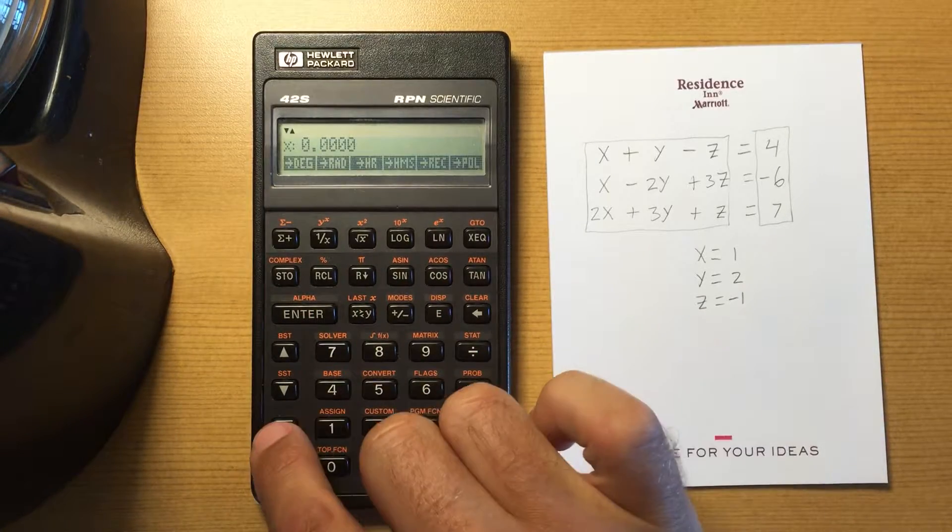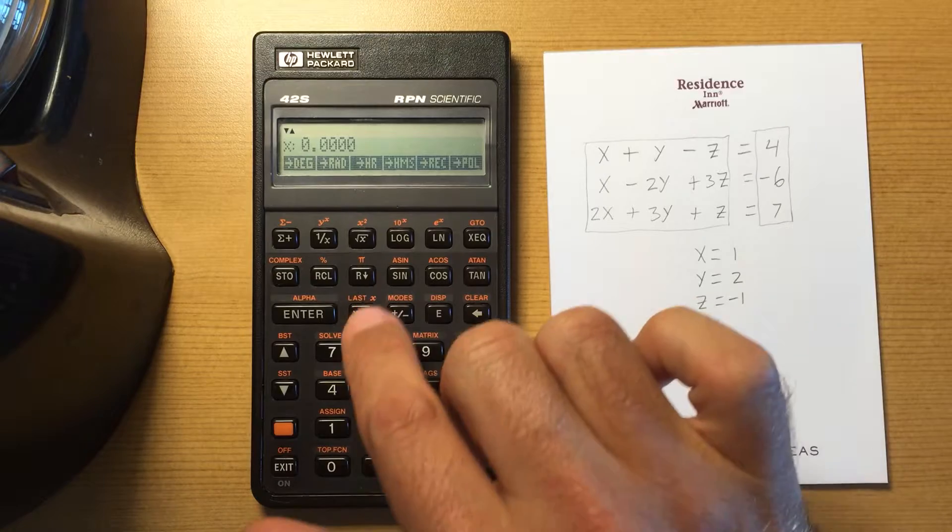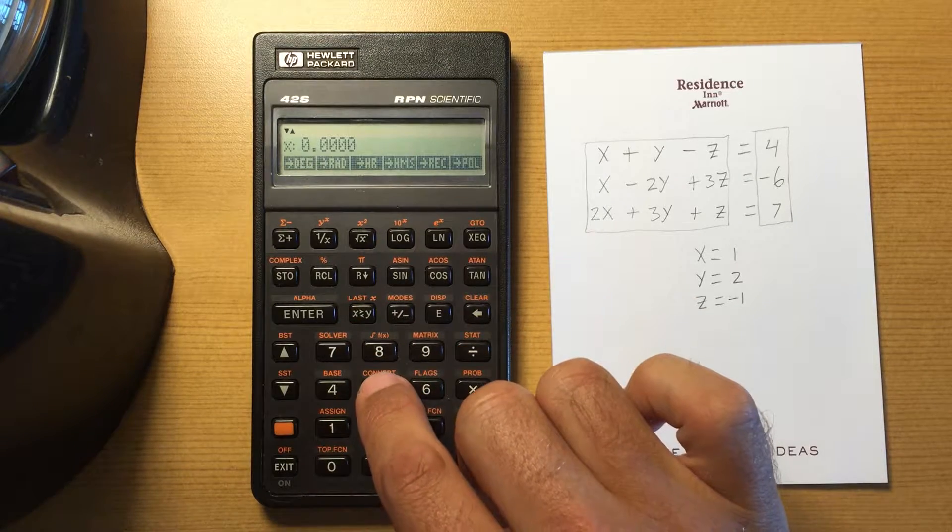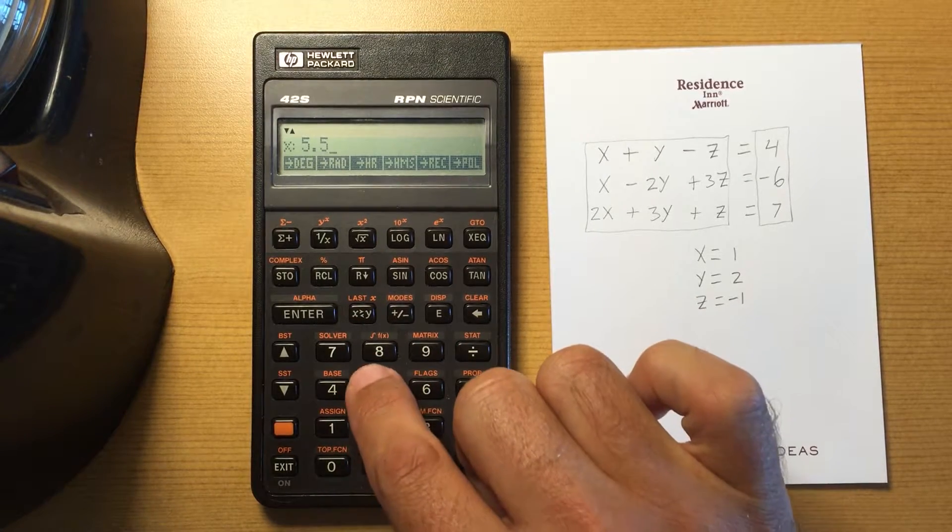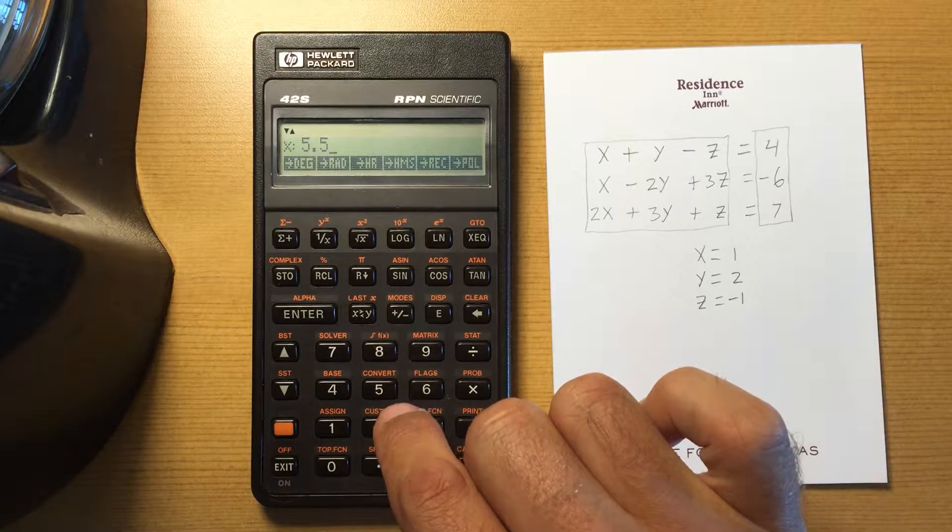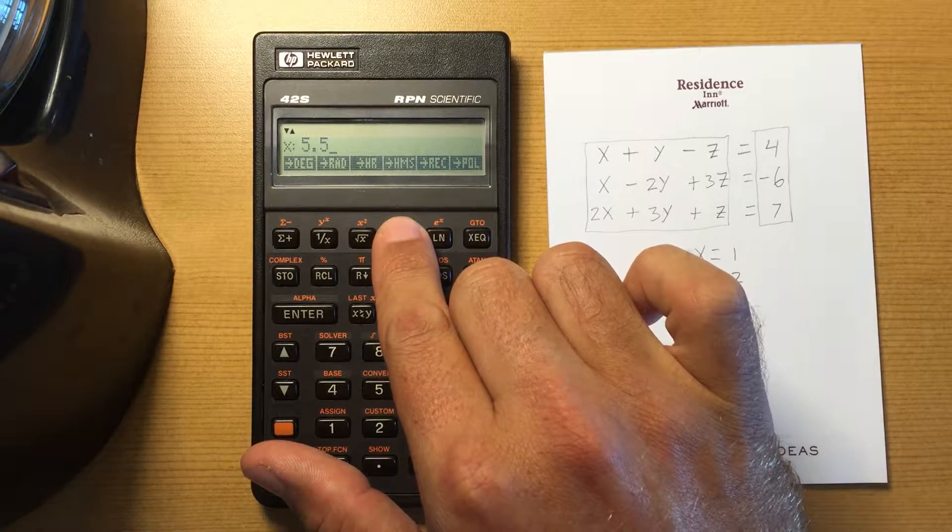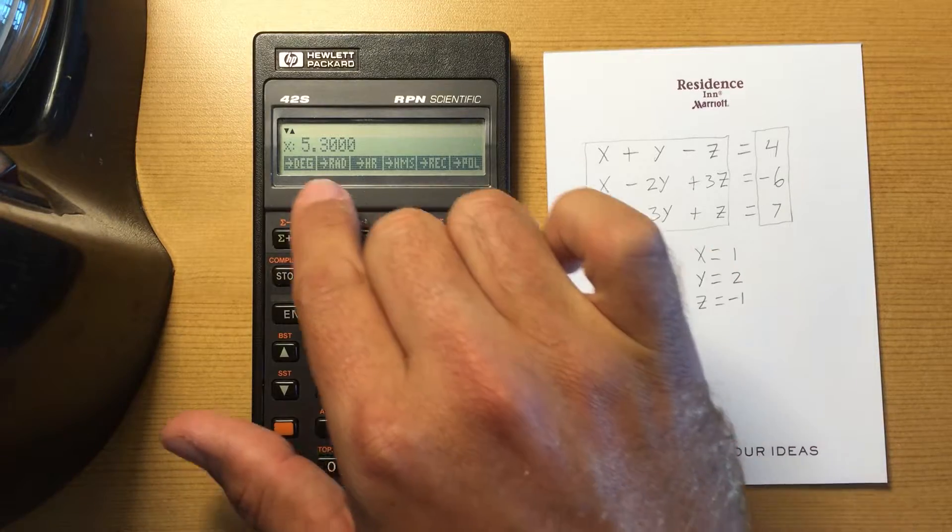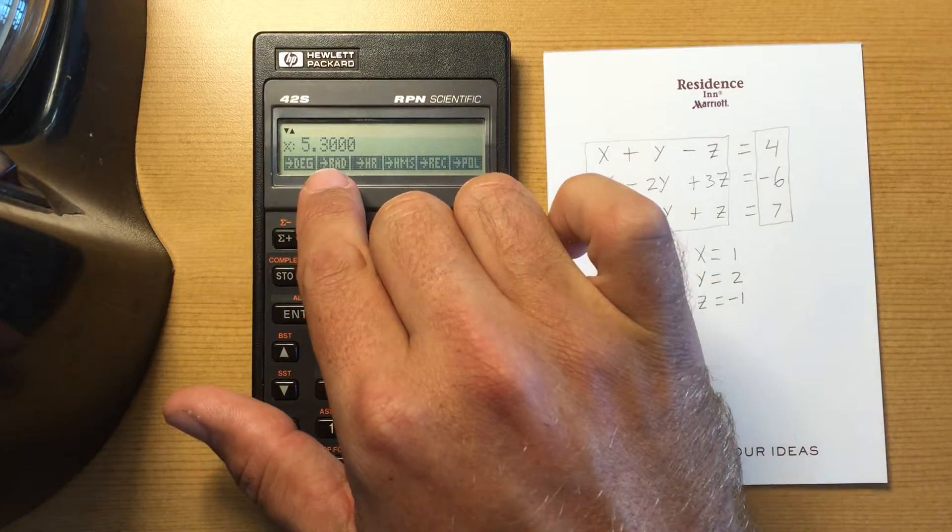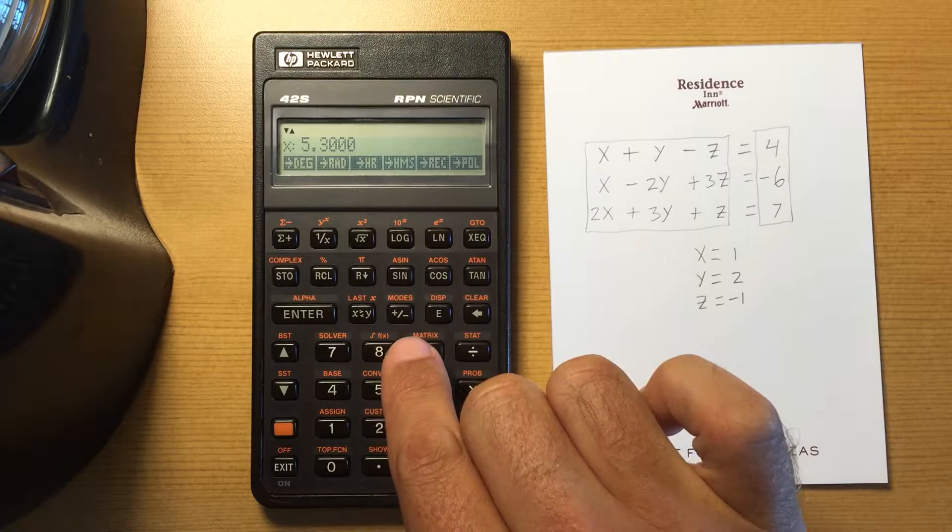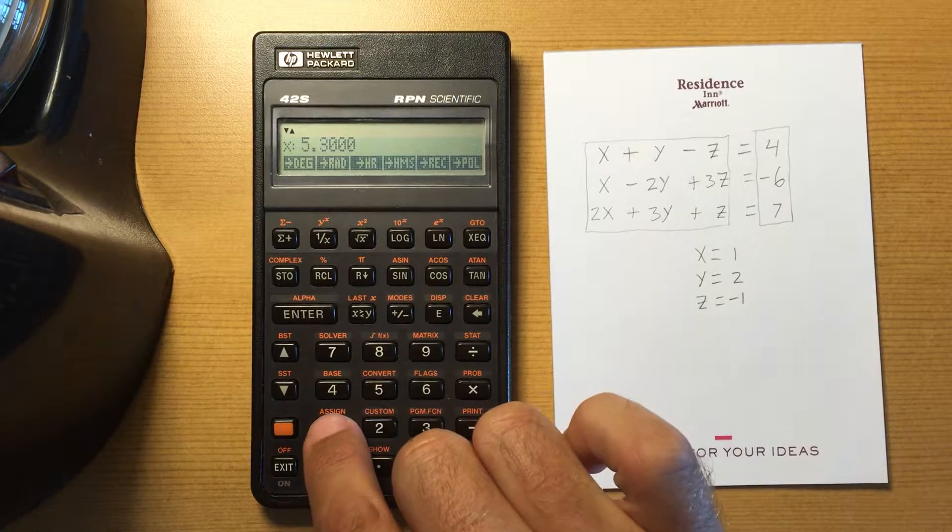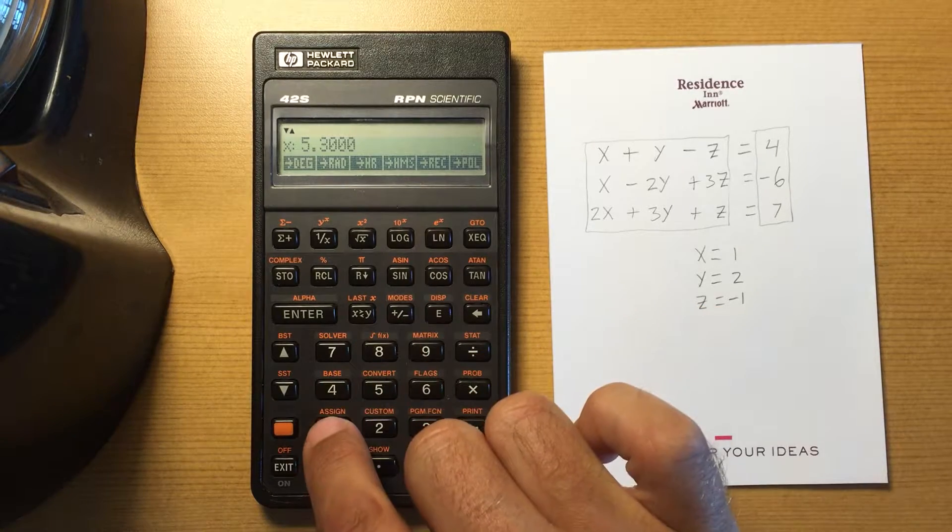If I've got, say, 5.5 hours, what is that in hours, minutes, seconds? That tells me it is 5 hours, 30 minutes, and 0 seconds.